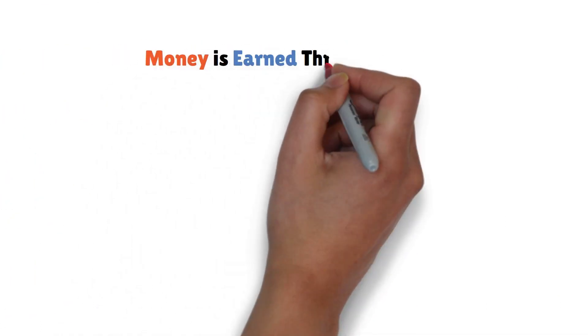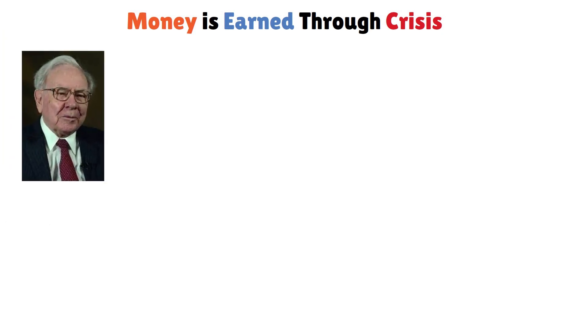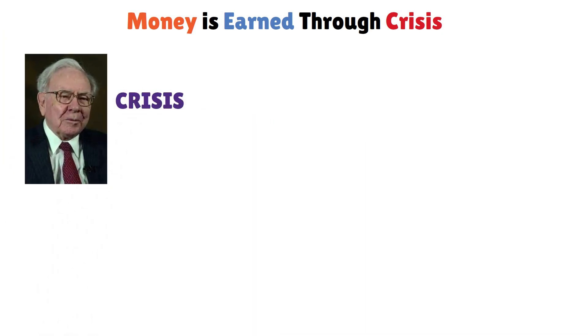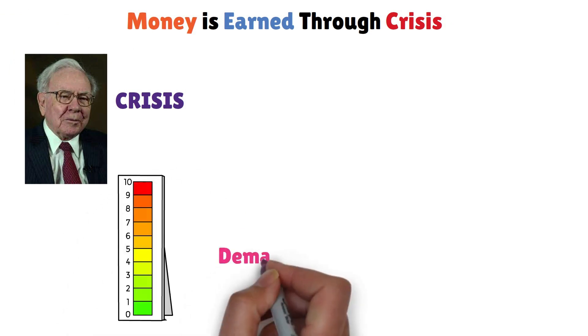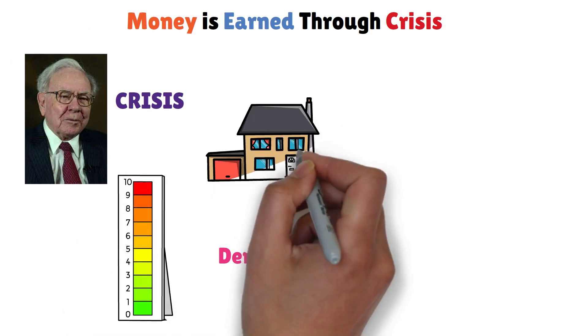Rule 5: Money is earned through crisis. Warren Buffett's wisdom extends beyond investing. During a crisis, certain needs become magnified, leading to increased demand for specific assets while prices fall.